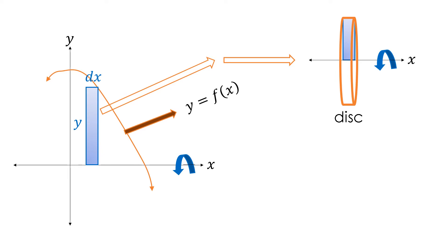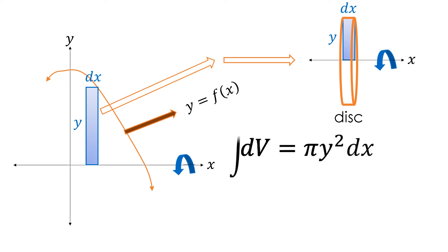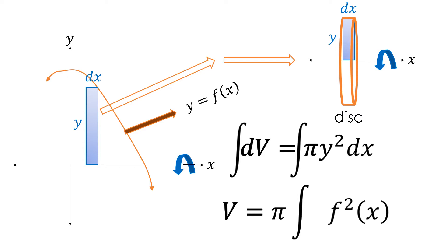The thickness of the disk will still be dx and its radius is equal to y. To solve for the volume of the disk, the differential volume is equivalent to pi times the square of the radius y, multiplied by the thickness dx. Integrating, we get the volume V equal to pi times the integral of y expressed as a function of x — that is, the integral of [f(x)]² dx.